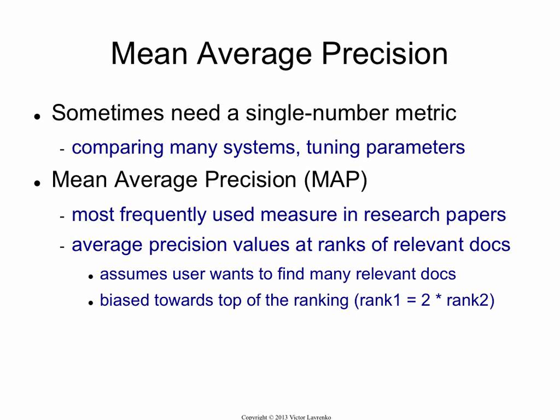It's not precision — don't confuse it with precision, it's a very different thing. Precision looks at a single cutoff point, at a single threshold in the ranking. Average precision looks at the entire ranking and assigns a quality number to it. It sort of mimics a user who's looking for all the relevant documents. But the way it averages, it assigns a lot more weight to things that happen at the beginning of the ranking, at the top, than to things that happen at the bottom.